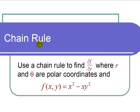This is a video on the chain rule. The question states: use a chain rule to find ∂f/∂r where r and θ are polar coordinates and f(x,y) = x² - xy².